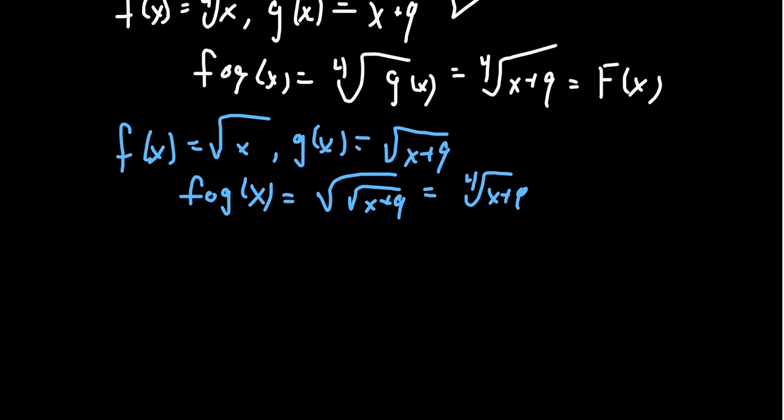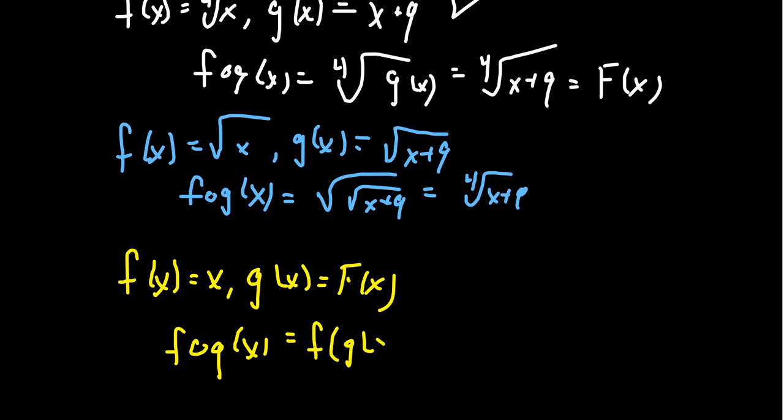Now, there is always sort of like a cheater way of doing it. If I were to take F of X to equal the identity function, and then G of X equals capital F of X here, notice in this situation, you take F composed with G of X. This is just going to give you F of G of X. But as F is just the identity function, this will just give you back G of X, which itself is just capital F of X. So that way works, but again, it's kind of like a cheater method.